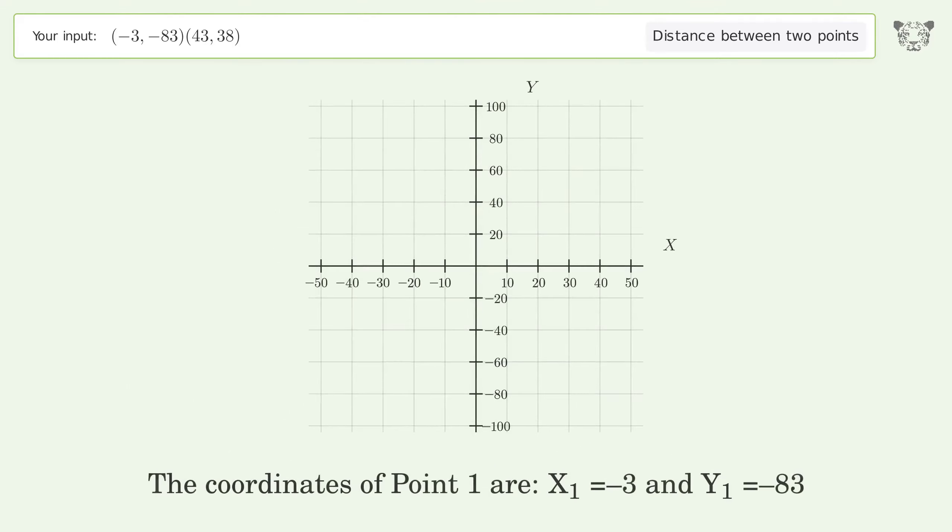The coordinates of point 1 are x1 equals negative 3 and y1 equals negative 83. The coordinates of point 2 are x2 equals 43 and y2 equals 38. d is the distance between the two points.